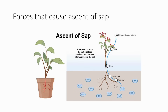Every time there is transpiration and water loss from the surface of the leaf, water starts getting pulled from the adjacent cell. From that cell water is lost, and water gets absorbed from the nearby cell, and so on — creating a pull. This suction pull is called transpirational pull, and it is one of the reasons why water gets absorbed into the root and transported upward.